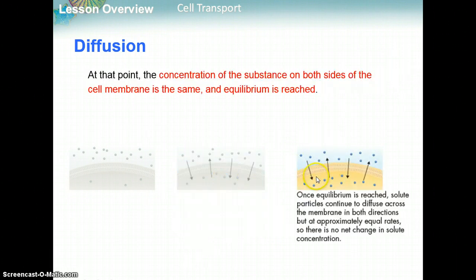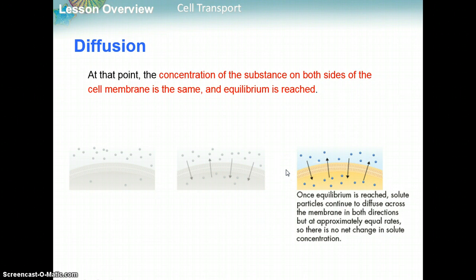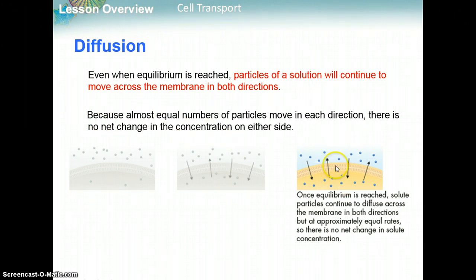Eventually equilibrium is reached, which is when the concentration on both sides of the membrane is equal. Movement will continue to happen, but in a way where there's no net change in concentration. The particles in the solution continue to move across the membrane in both directions, but because almost equal numbers of particles move in each direction, there's no net change in concentration — equilibrium is maintained.